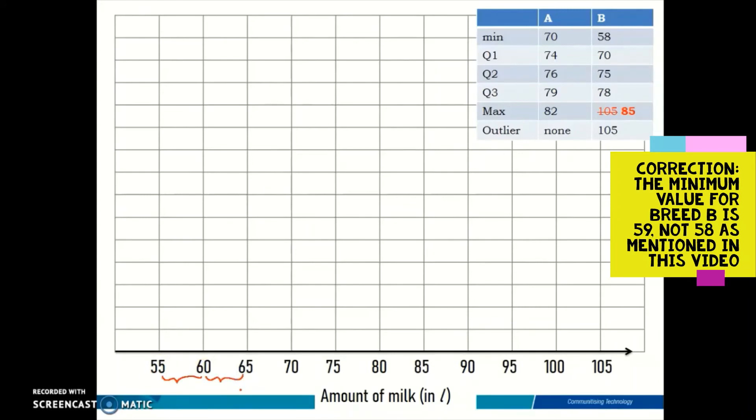I'm going to start drawing the first box for breed A. My box starts with the whisker. You can start drawing however you want, from the box then the whiskers, or from the whisker. As long as you have the box plot. This is my box plot for breed A: minimum 70, quartile 1 is 74, quartile 2 is 76, quartile 3 is 79, and maximum 82. This is the perfect box plot for breed A.